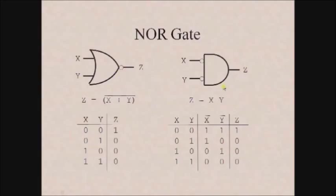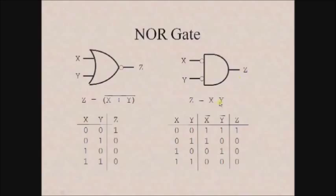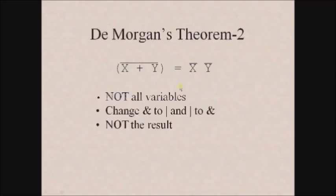For the NOR gate, the output expression is z equals x plus y whole complement. Applying De Morgan's theorem: NOT all variables, replace OR with AND, then NOT the result. This gives x bar and y bar as inputs to an AND gate, with output x bar·y bar. Comparing the truth tables for both symbols confirms the output z is the same. This is the alternate symbol for representing the NOR gate.